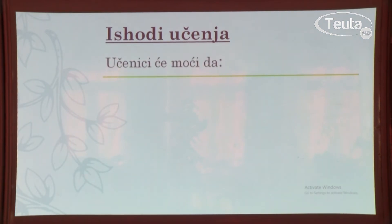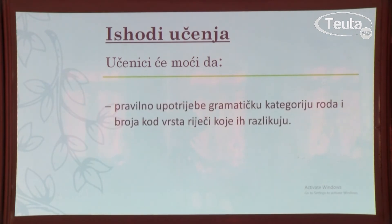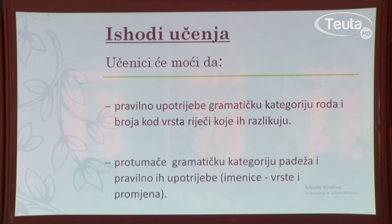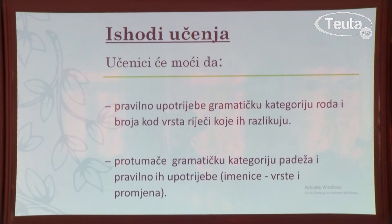Na ovom času realizovat ćemo sljedeće ishode učenja. Tokom učenja učenici će moći da pravilno upotrijebe gramatičku kategoriju roda i broja kod vrsta riječi koje ih razlikuju, i protumače gramatičku kategoriju padeža i pravilno ih upotrijebe sa akcentom na imenice, njihovu vrstu i promjene.